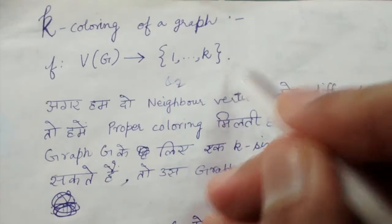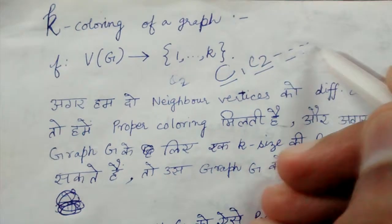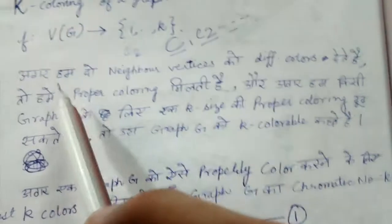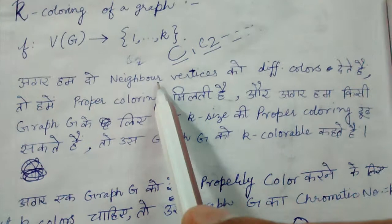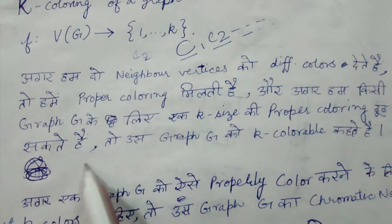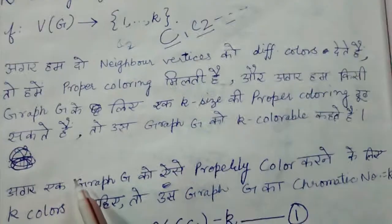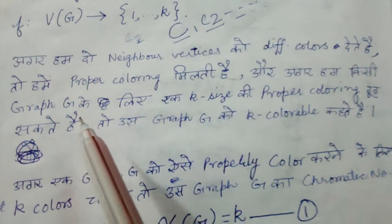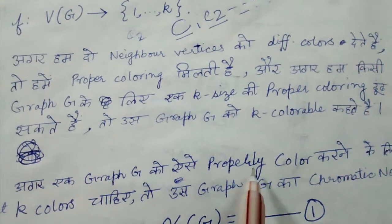So colors are C1, C2, up till Ck — these are like red, blue, green and so on. If we give each of the two neighboring vertices a different color, then we get a proper coloring. That is, if two vertices are neighbors, we give them different colors. And if we are able to obtain a proper k-coloring for a graph, then we call that graph a k-colorable graph.